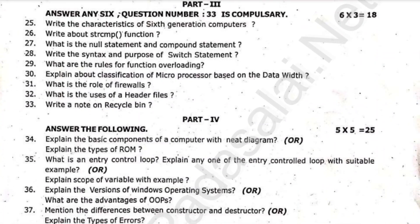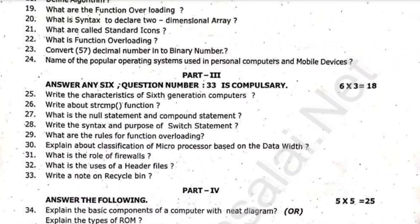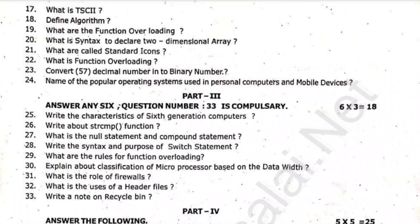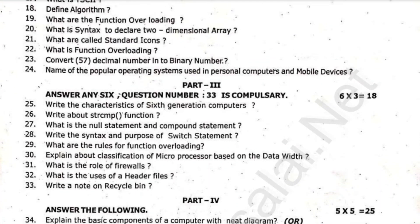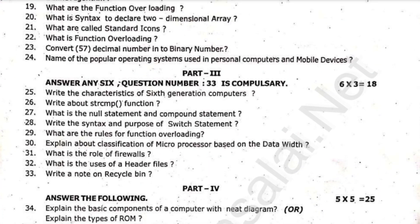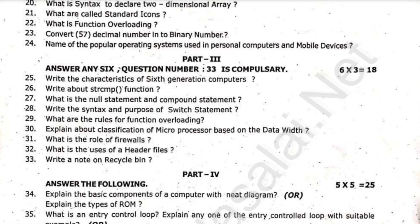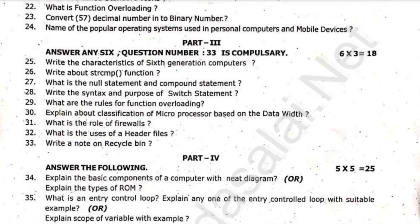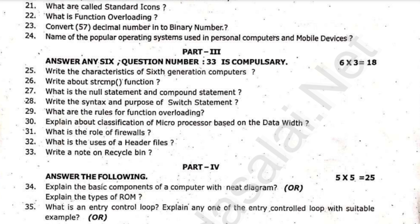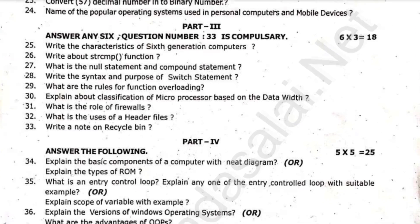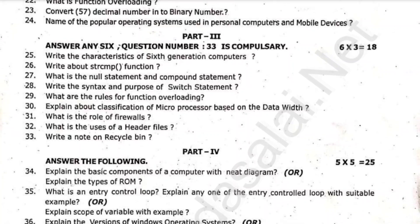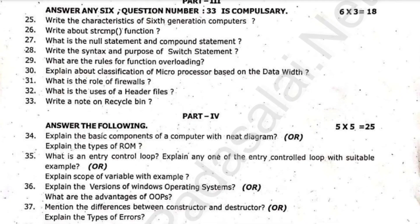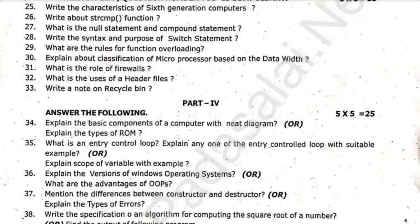Explain the entire computer with a NEET diagram. Explain the types of ROM. What is the entry control loop — explain any one entry control loop with a suitable example. Explain the storage scope of variables with examples. 36 versions of Windows operating system, advantages of Windows, difference between constructor and destructor, types of errors, specification of an algorithm for computing the square root of a number, find the output of the following program.